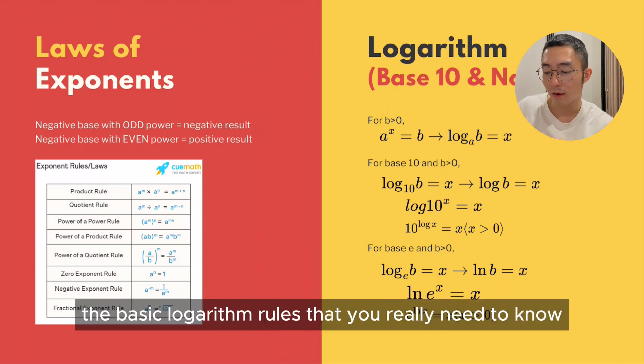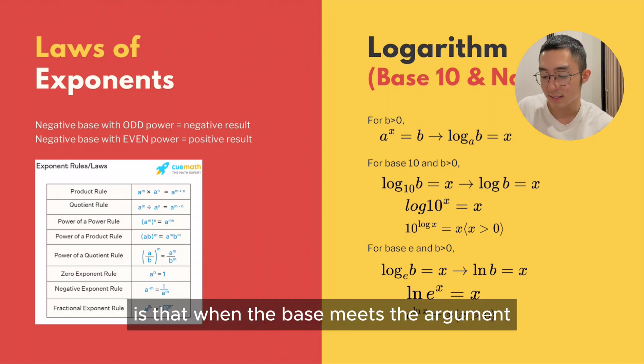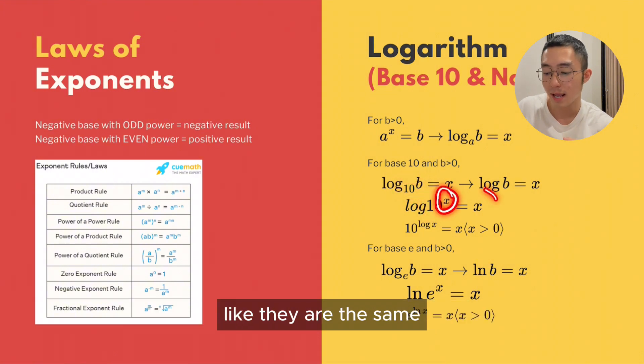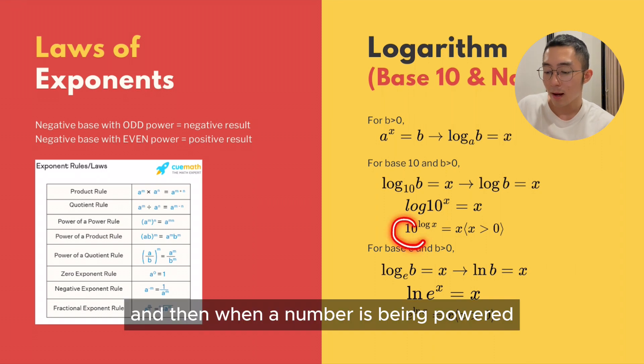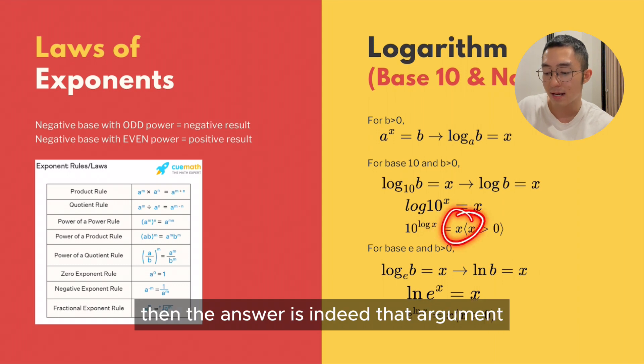The basic logarithm rules that you really need to know is that when the base meets the argument, like they are the same, the answer is just immediately the power. And when a number is being powered to the logarithm of its own base, then the answer is indeed that argument.